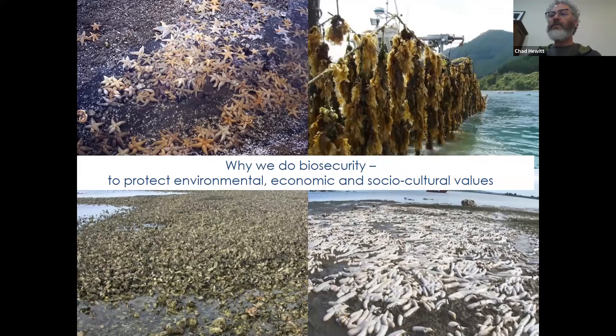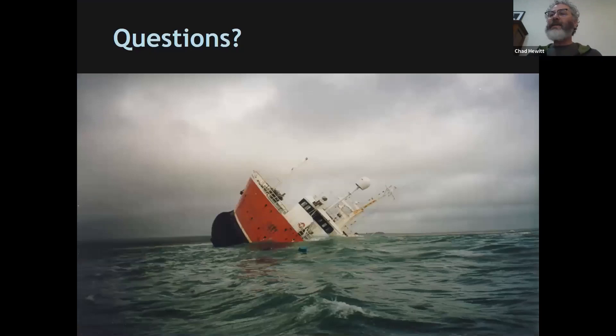We conduct biosecurity to protect environmental, economic, and sociocultural values. Examples of introduced species of concern include Asterias amurensis the Northern Pacific sea star, Japanese kelp on mussel lines, a native Australian species introduced into a New Zealand seagrass bed, and Pacific oysters that have gone feral and escaped from farms. A vessel that sank introduced a non-native species into the Chatham Islands in New Zealand — a unique one-off event with devastating consequences.